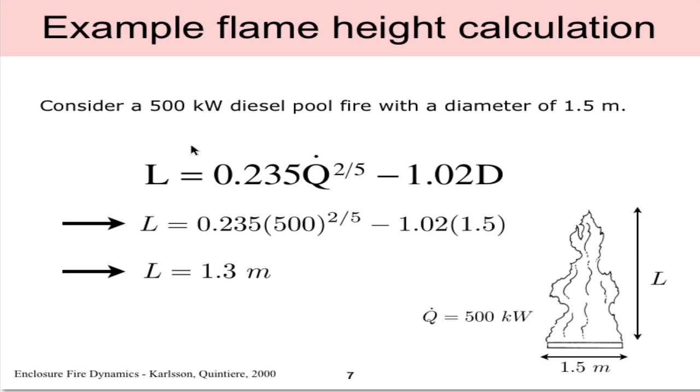Let's consider an example where we have a 500 kilowatt diesel pool fire with a diameter of 1.5 meters. If we have Q of 500 and a diameter of 1.5, if we plug those into the above equation and notice the units are consistent, 500 kilowatts, 1.5 meters, we get out a physical flame height L of 1.3 meters from this equation. So 1.3 meters is about a 4-foot flame height.